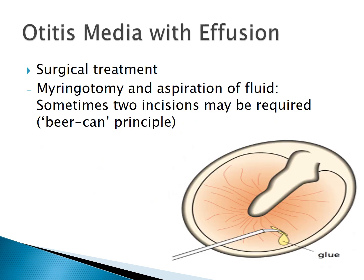The surgical treatment includes myringotomy — placing an incision over the drum to drain the middle ear fluid. In this figure of the right ear, a radial incision is placed in the antero-inferior quadrant of the eardrum and thick glue-like fluid is aspirated using the Politzer's myringotome. Sometimes if the fluid is thick, two incisions are required — one in the antero-inferior and another in the antero-superior quadrant — which is sometimes called the Beer-Kant principle.